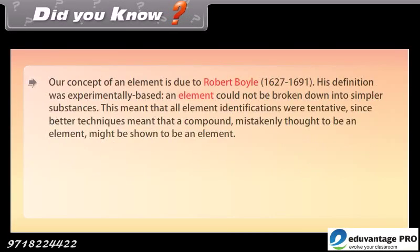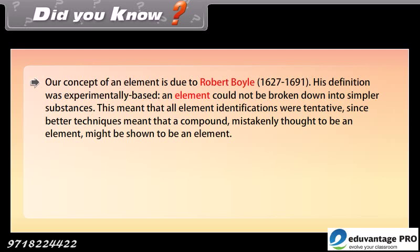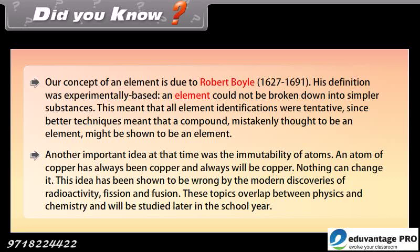Did you know? Our concept of an element is due to Robert Boyle (1627-1691). His definition was experimentally based: an element could not be broken down into simpler substances. This meant that all element identifications were tentative, since better techniques meant that a compound mistakenly thought to be an element might be shown to be an element. Another important idea at that time was the immutability of atoms. An atom of copper has always been copper and always will be copper. Nothing can change that. This idea has been shown to be wrong by the modern discoveries of radioactivity, fission, and fusion. These topics overlap between physics and chemistry and will be studied later in the school year.